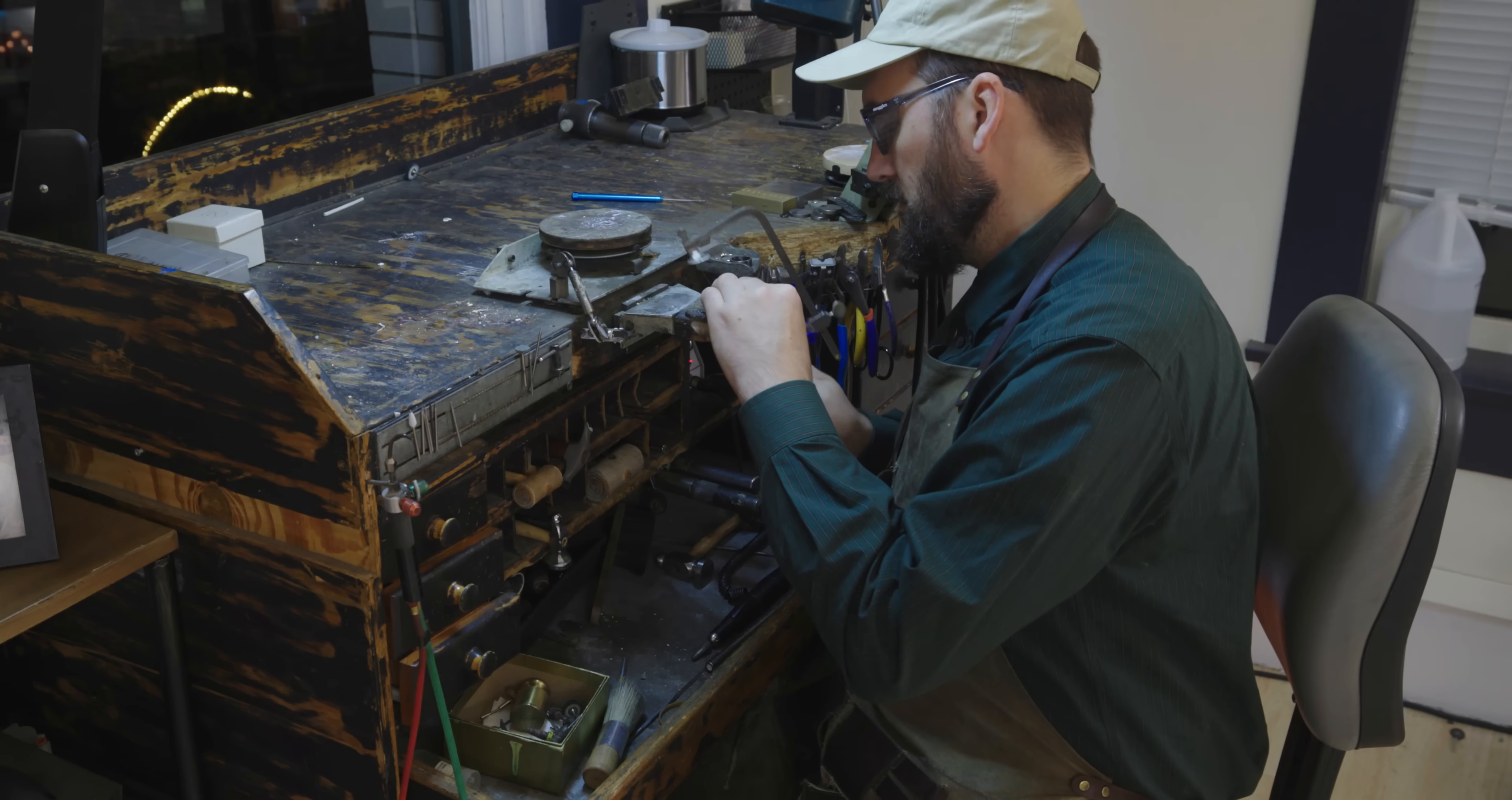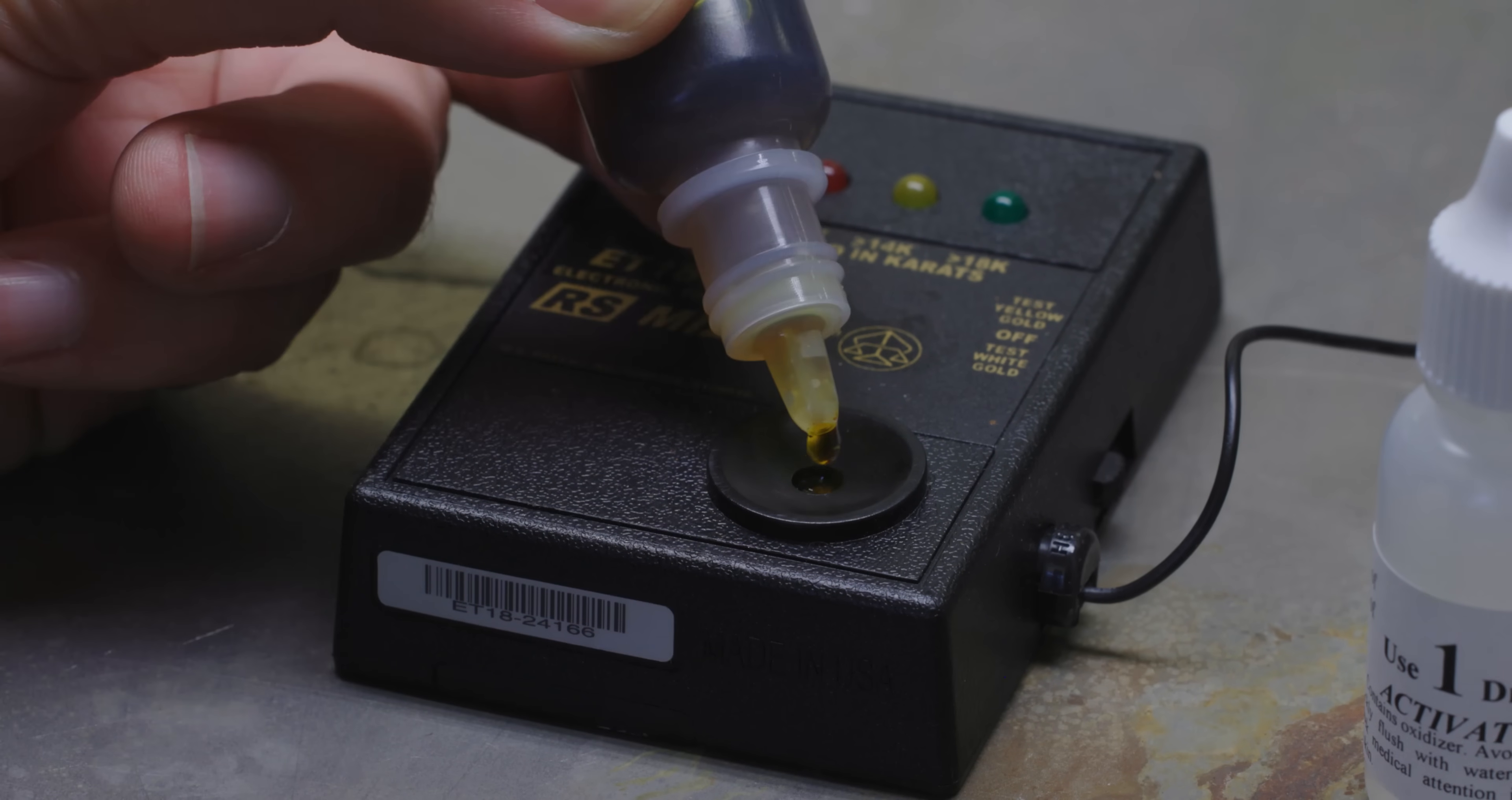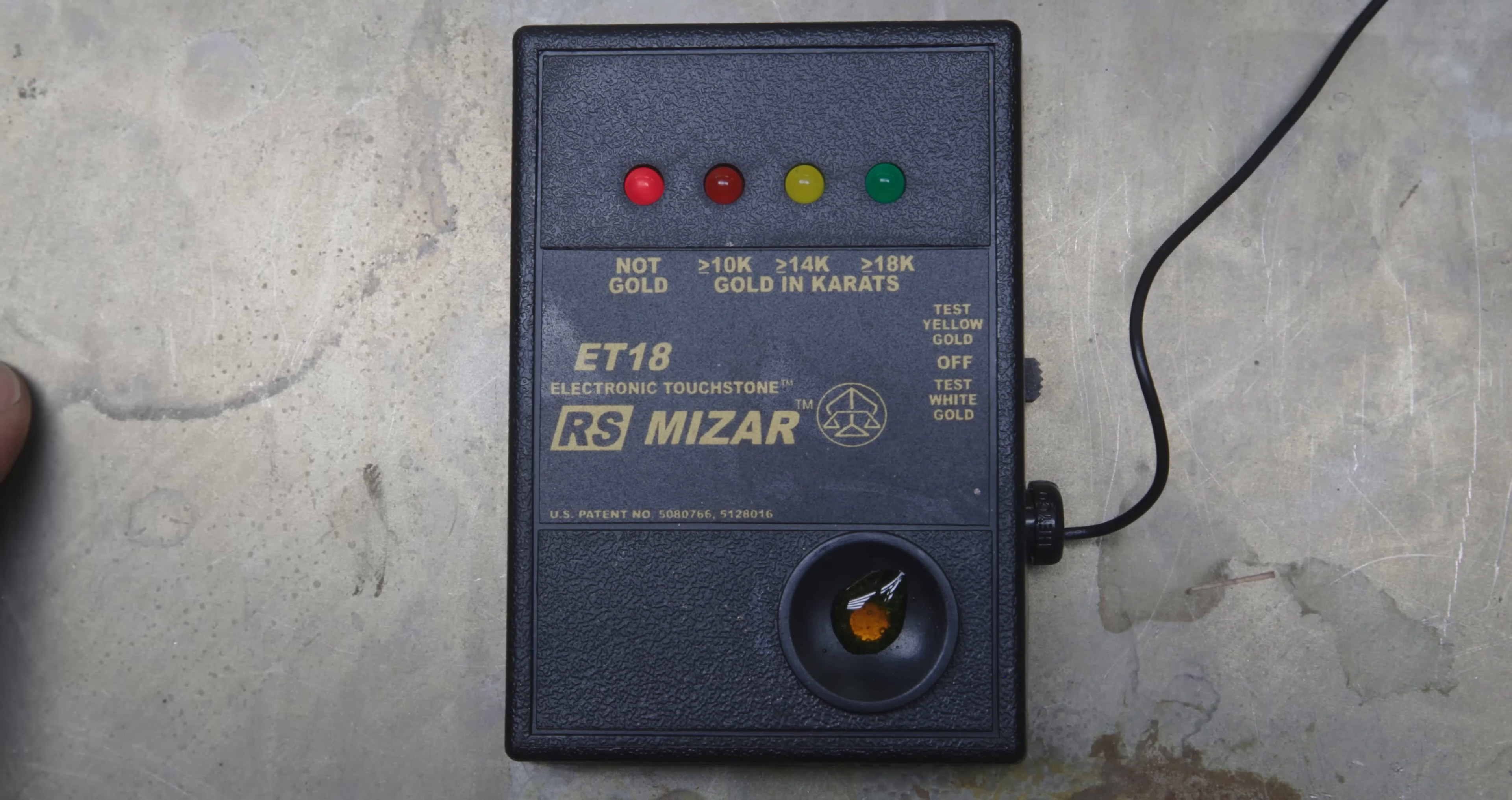Now the first step in my investigation is to cut a small sliver off of this blob. I'm going to use my gold tester to find out exactly what it's made of. Using an acid solution, this machine will tell me whether the metal is not gold, 10 carat, 14 carat, 18, etc.